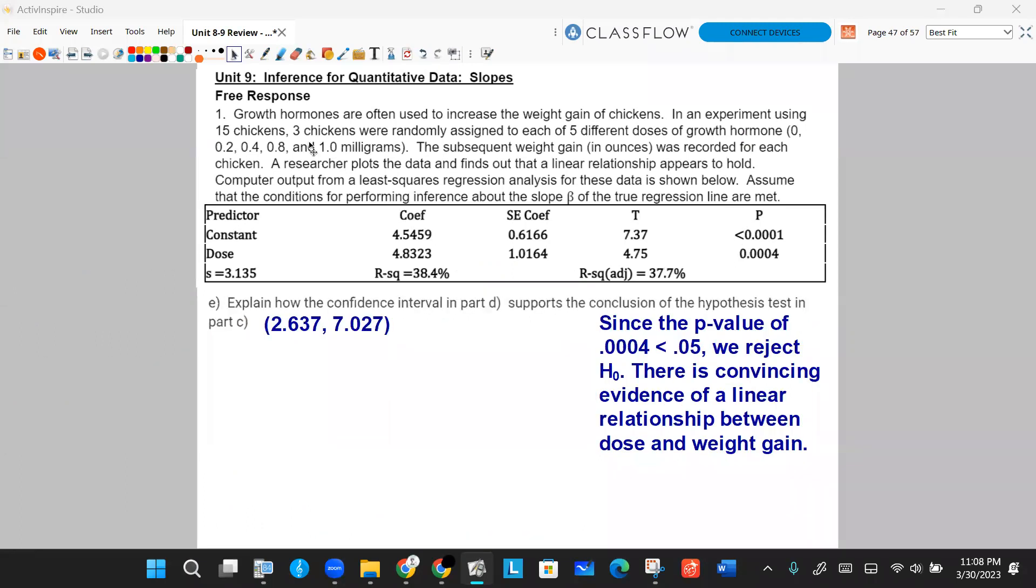Part E simply says explain how the confidence interval in Part D supports the conclusion of the hypothesis test in Part C. So look at our interval from Part D, 2.6 to 7.02. And look at our rejection for Part C and notice that we rejected because we had a very small p-value. In other words, we said we had convincing evidence of a linear relationship.